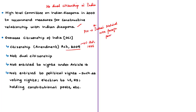Registered overseas citizens of India shall not be entitled to the rights conferred on a citizen of India under Article 16 of the Indian Constitution, which deals with equality of opportunity in matters of public employment. OCI cardholders also do not have political rights — they have not been given any voting rights to participate in elections of Lok Sabha, Rajya Sabha, Legislative Assembly, or Legislative Council.